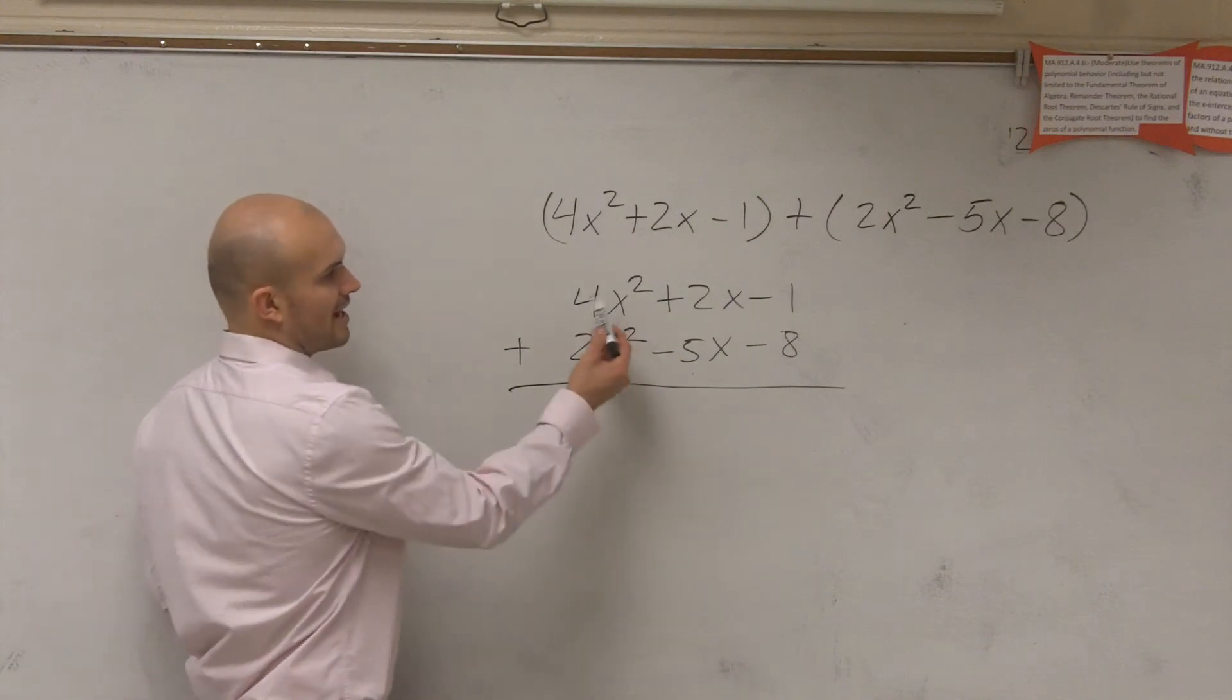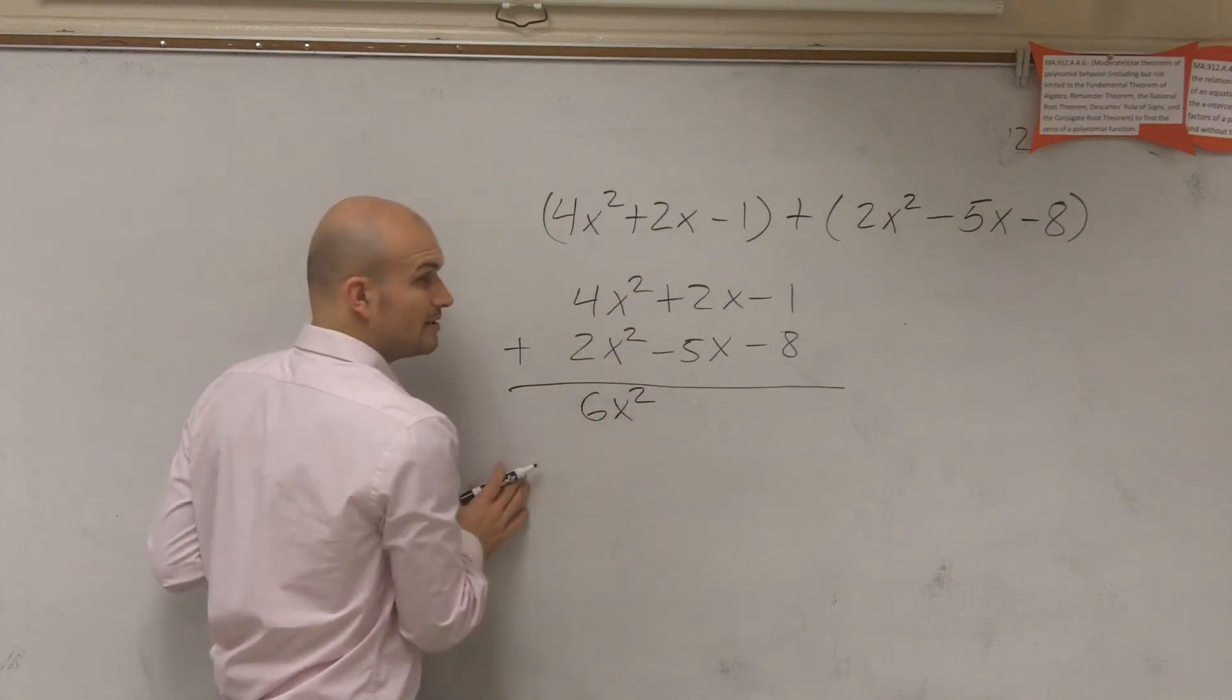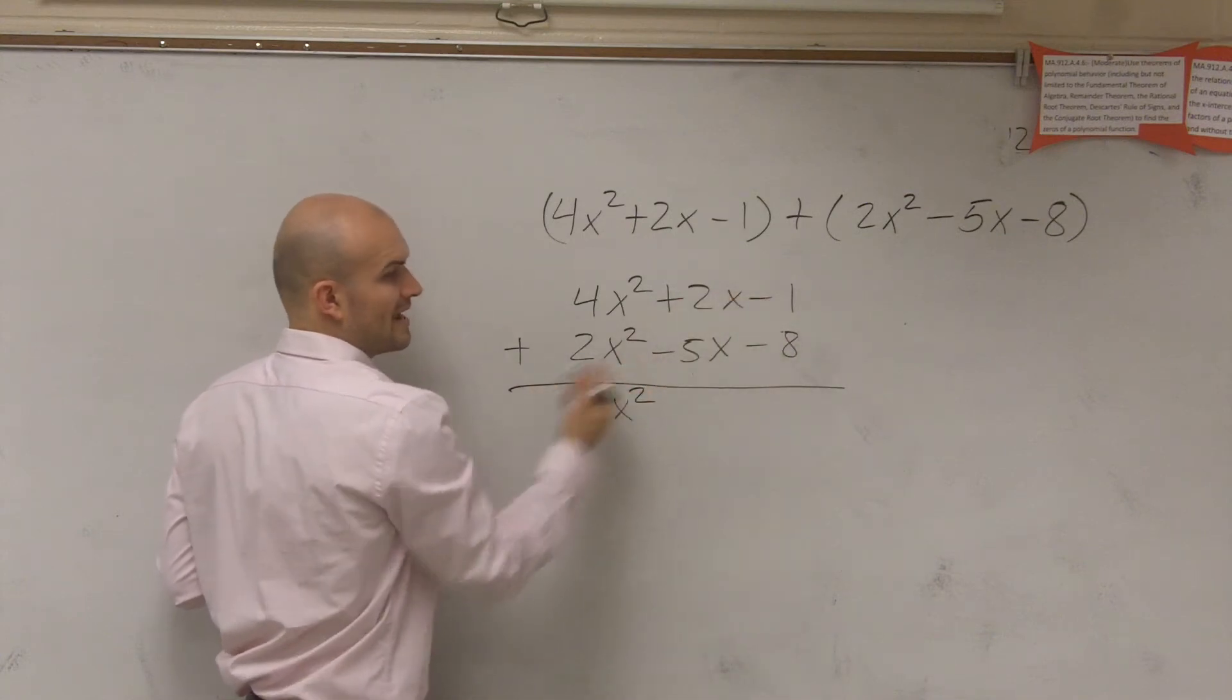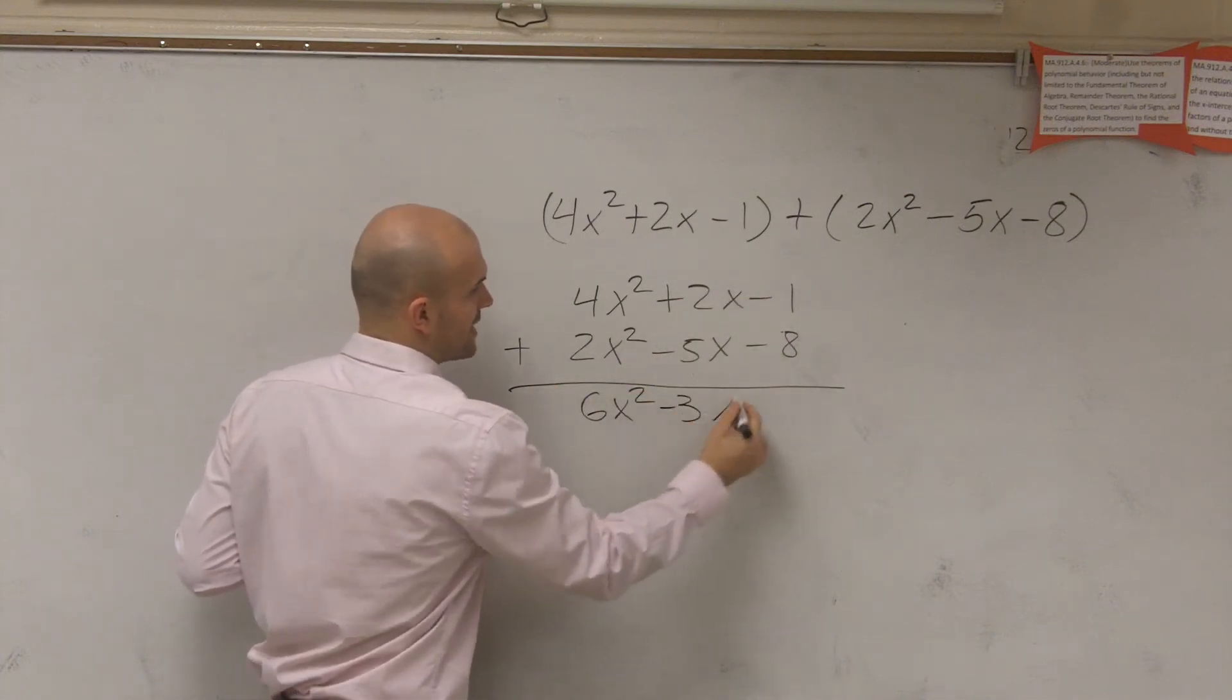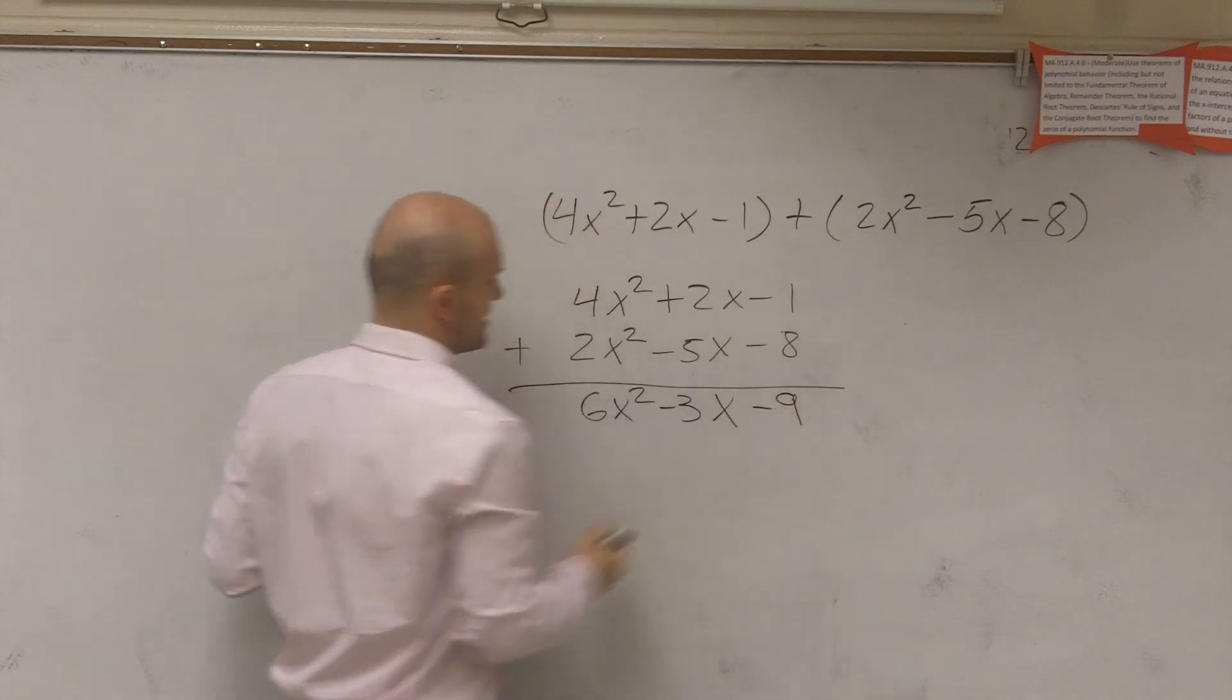So now when adding the like terms, 4x² + 2x² = 6x². 2x + (-5x) = -3x. And -1 + (-8) = -9.